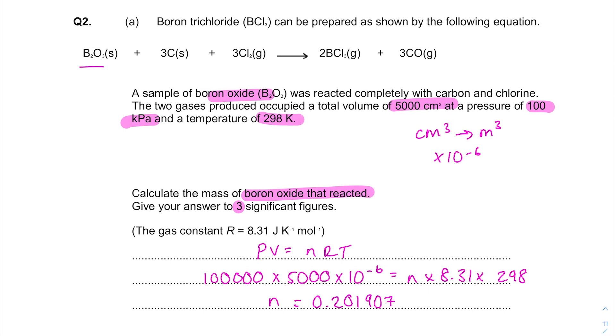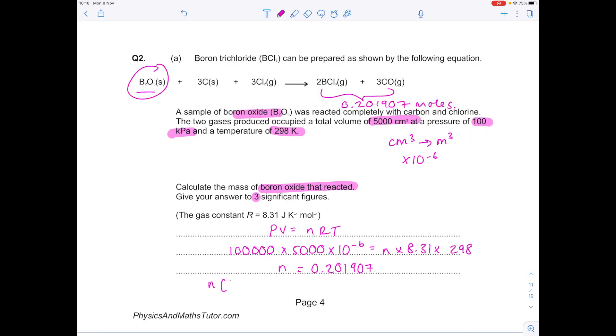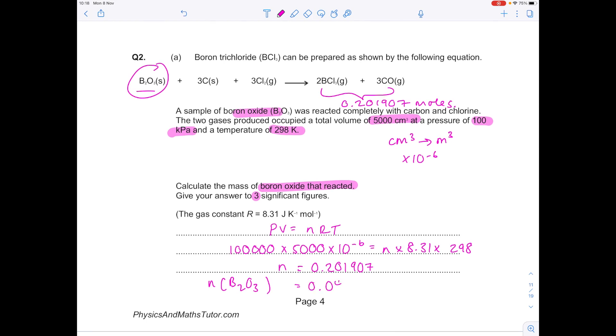But if you re-read the question, that's the number of moles for the gas. Because we're after the mass of the boron oxide, we need to work out the number of moles. Look at the mole connection. We've got a 5 and only 1. So to find the number of moles of B₂O₃, you need to do 0.201907 divided by 5 to get 0.04038. Make sure you keep that number in your calculator.